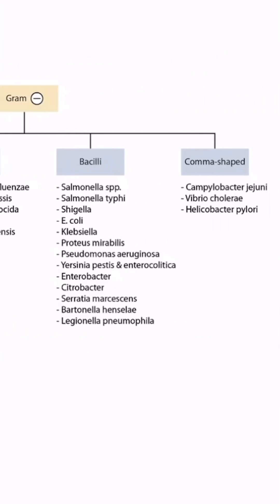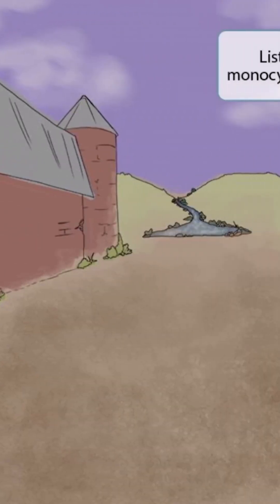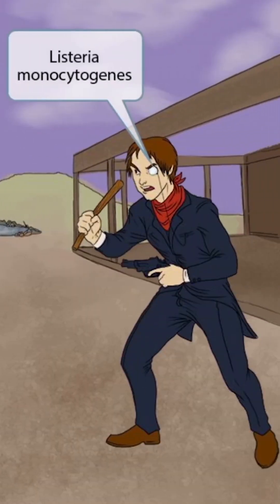This is our bacteria overview figure. In this video, we'll be discussing Listeria monocytogenes, which you can see right here. This scene will take place in an old western town with a duel between two gunslingers. The first character is this guy with a monocle. Monocle sounds kind of like monocytogenes, so we're using it in this image as a symbol for Listeria monocytogenes.